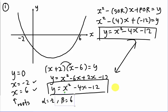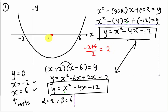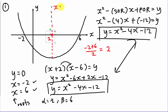To find the axis of symmetry for a parabola, it always passes through the midpoint of the x-intercepts. The x-intercepts are −2 and 6, so the midpoint is (−2 + 6) / 2 = 4/2 = 2. Therefore the axis of symmetry is x = 2.